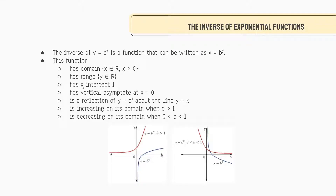Since we've done that, we know the x-intercept now equals 1, whereas before it was the y-intercept that equaled 1. We also have a vertical asymptote at x equals 0, whereas before we had a horizontal asymptote at y equals 0. The reflection of y equals b to the power of x about the line y equals x gives us our inverse function. Reflecting on the y equals x line flips the x and y values, which flips the domain and range.